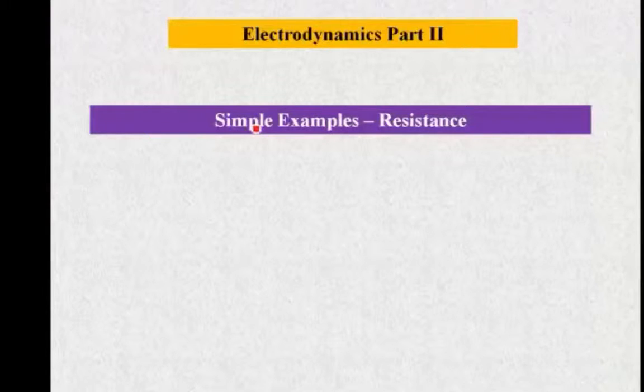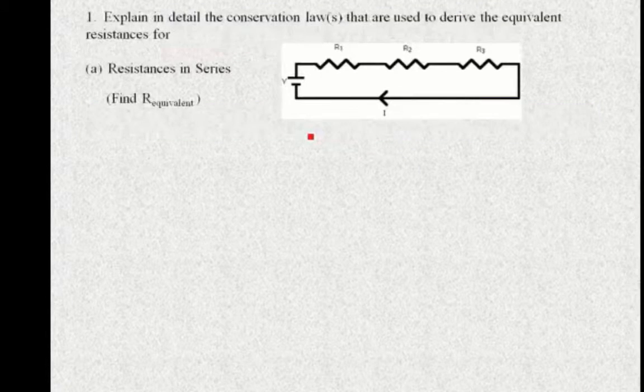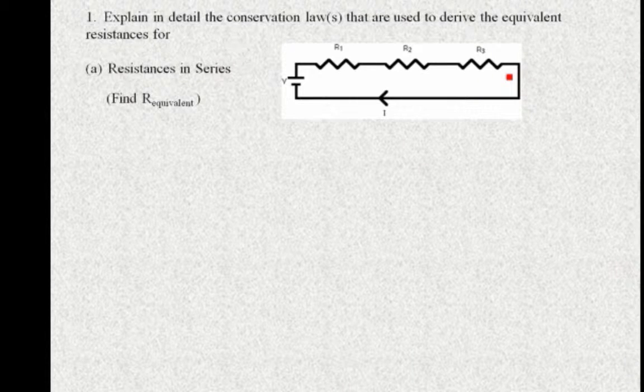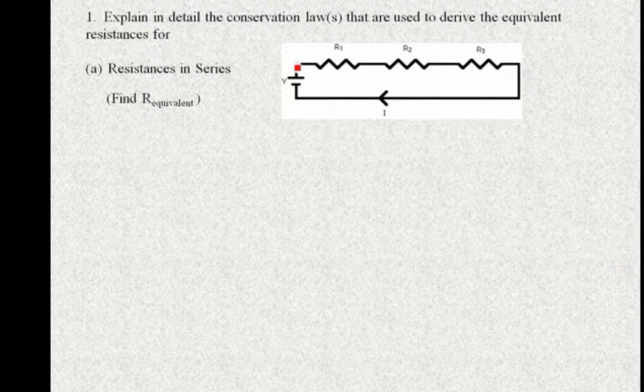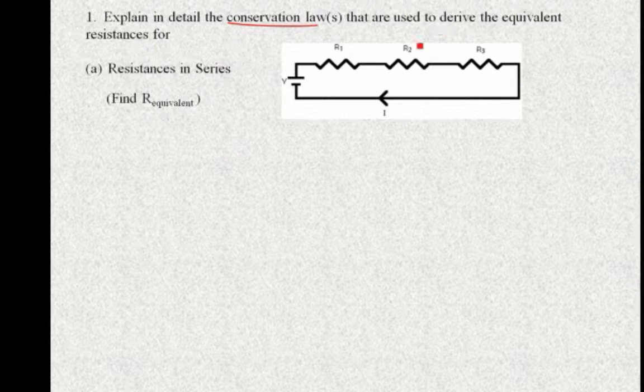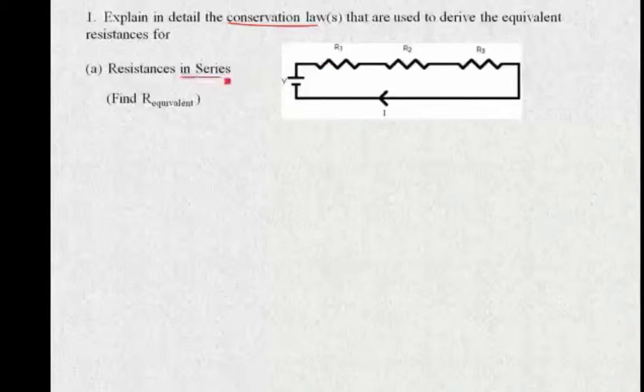So let's take a look at some simple examples dealing with resistance. The first one is a very simple case where we have three resistors in series. And the question I'd like to ask first is what are the conservation laws or law that are used to derive the equivalent resistor for these three resistors? So we're talking about, of course, resistors in series.